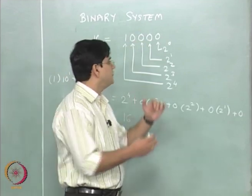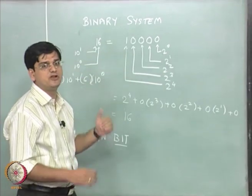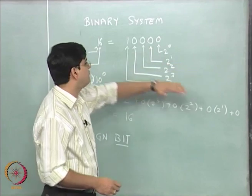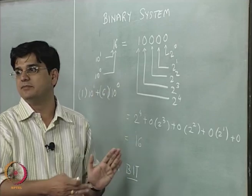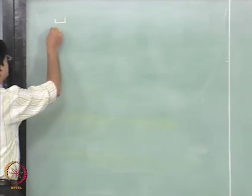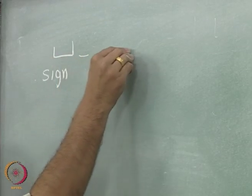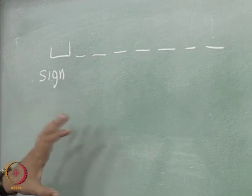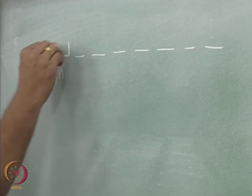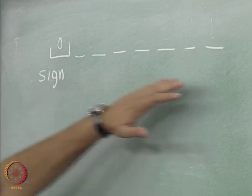In general, what we are going to have in a computer representation is that an integer number will be represented by a finite number of bits. The first bit represents the sign bit and the remaining bits represent the actual number. The first bit will be a sign bit and the remaining 7 bits are going to represent the number. For a positive number, the sign bit is going to be 0 and the remaining bits are going to represent the rest of the number.